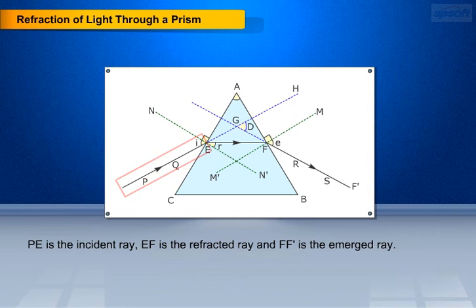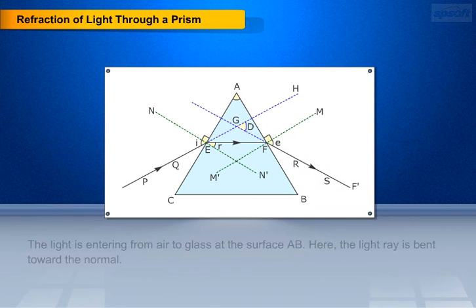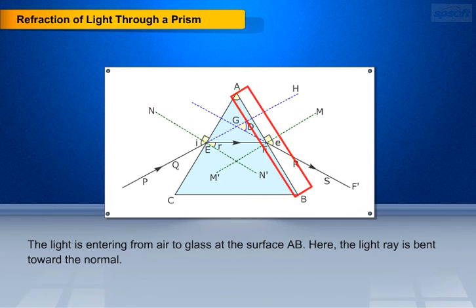Here P is the incident ray, EF is the refracted ray, and FF' is the emerged ray. The light is entering from air to glass at the surface AB. Here the light ray is bent toward the normal.